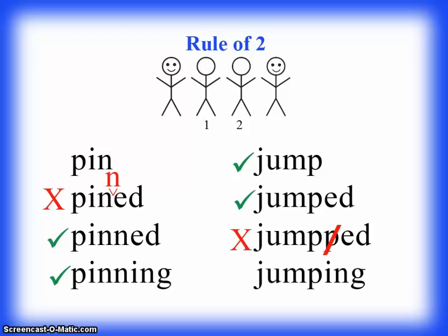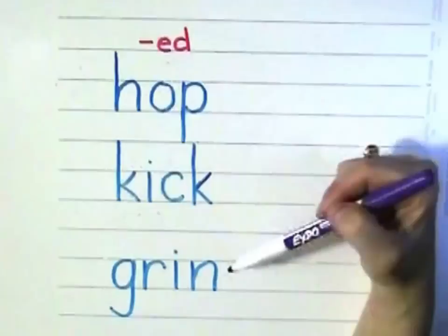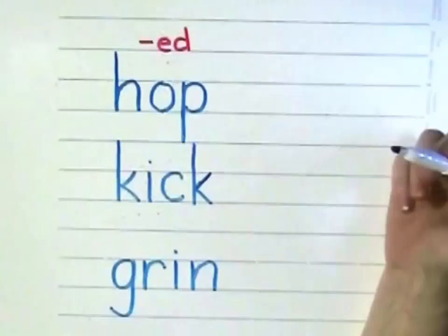That was wrong. Let's look at "jumping." Was that one done correctly? Yes. There are two consonants in between the U and the I, so yes, that is the correct way to spell "jumping." Now let's practice some words together ourselves. Pause the video and copy "hop," "kick," and "grin" onto your paper.